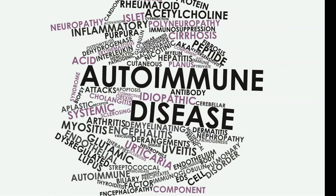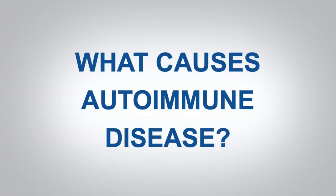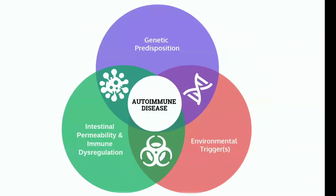So what causes autoimmune disease? Extensive research by Alessio Fasano, a world-renowned gastroenterologist and researcher, has shown us that there are three primary factors that trigger autoimmune disease: genetic predisposition, intestinal permeability, immune dysregulation, and environmental triggers. These are what we refer to as the autoimmune triad.